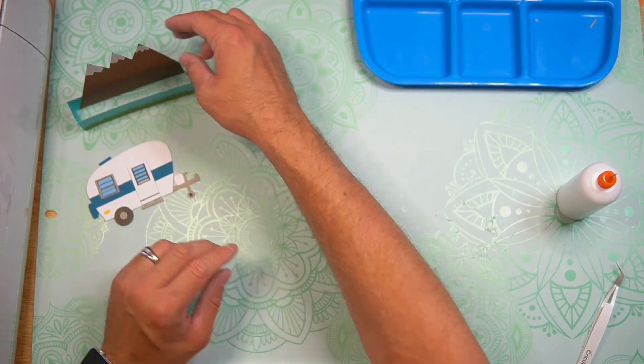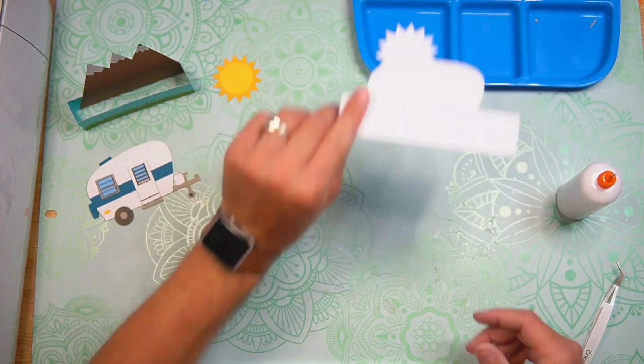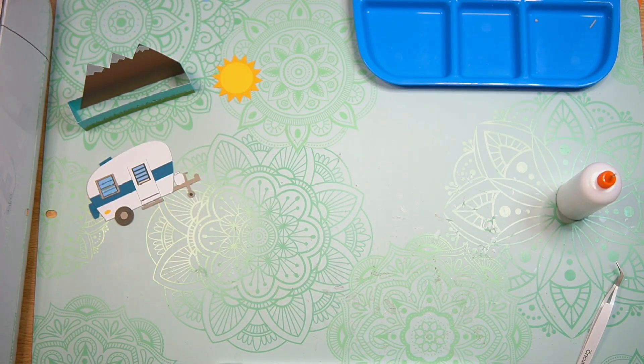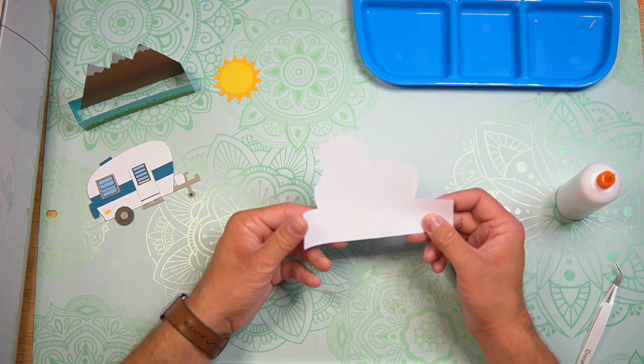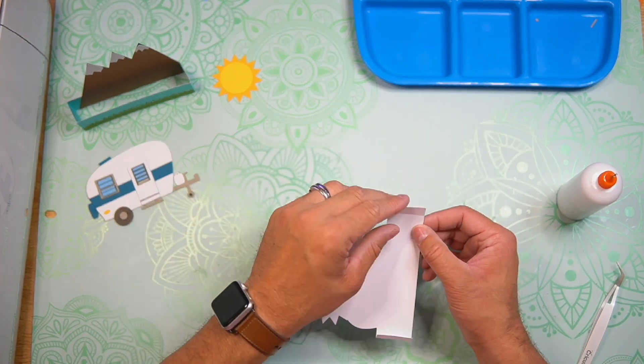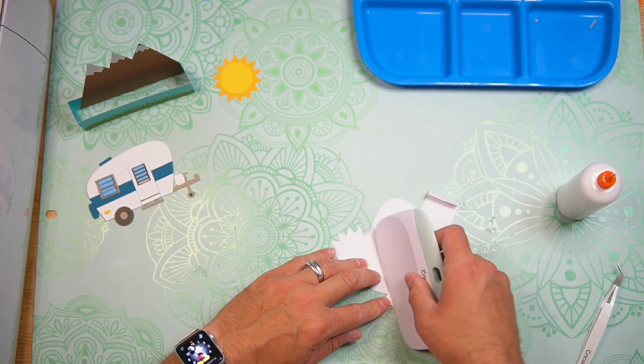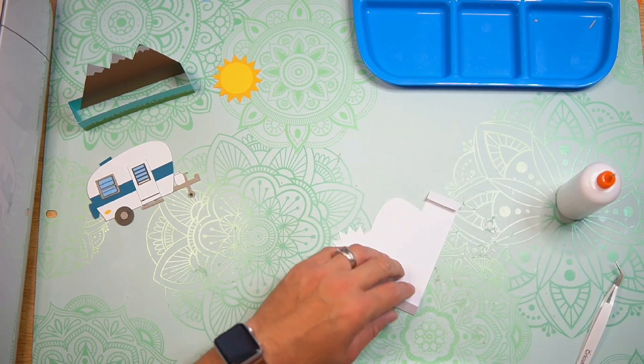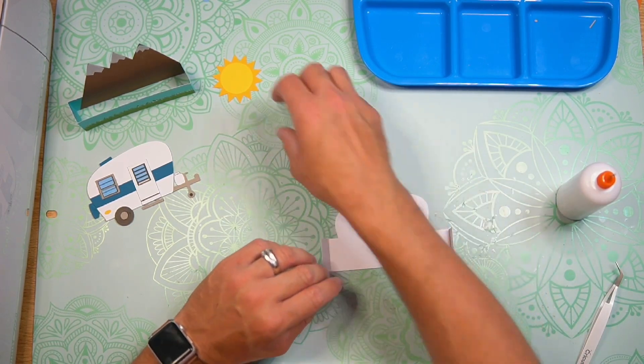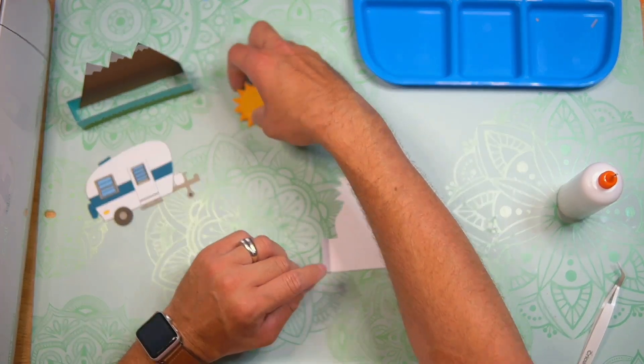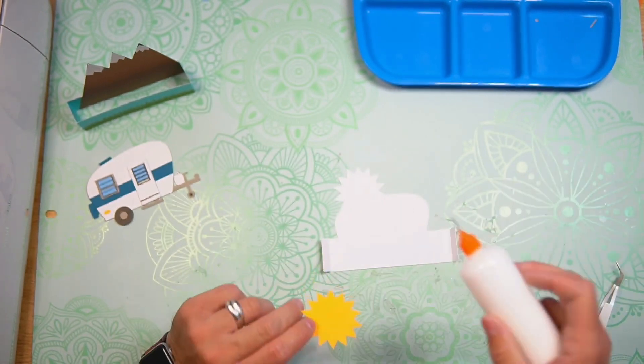Here we go. We can set the box to the side just for a moment. We're going to go ahead and grab our inside piece. I want you to fold the tabs towards you. Go ahead and give those a burnish. Now we can go ahead and add our sun to the inside piece.